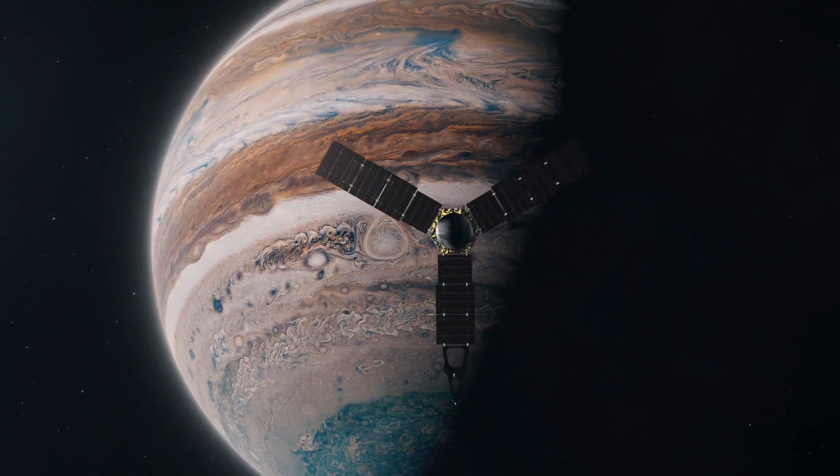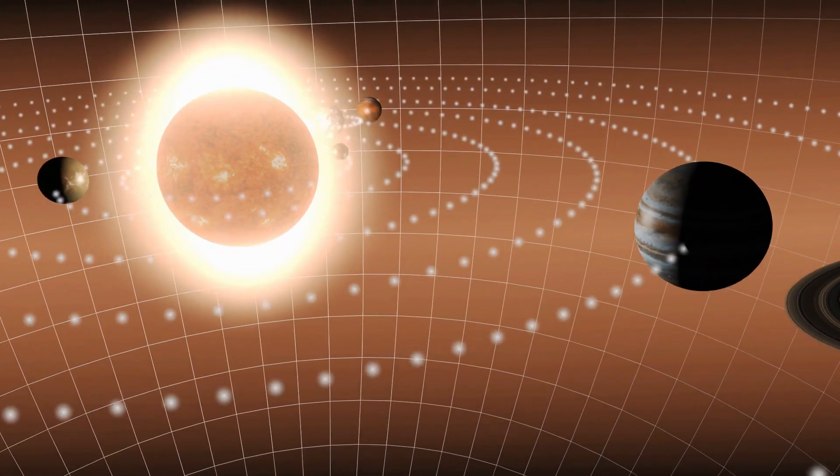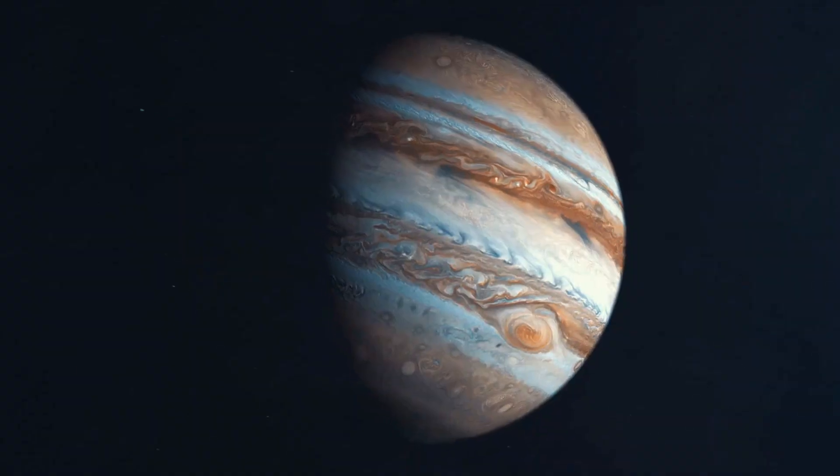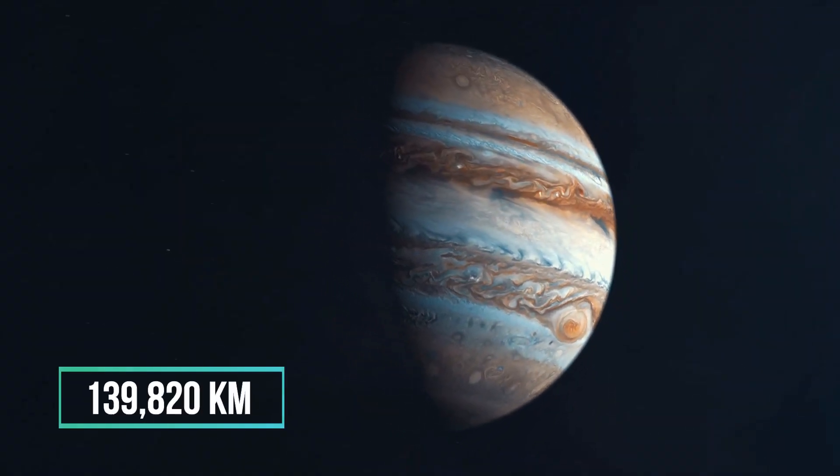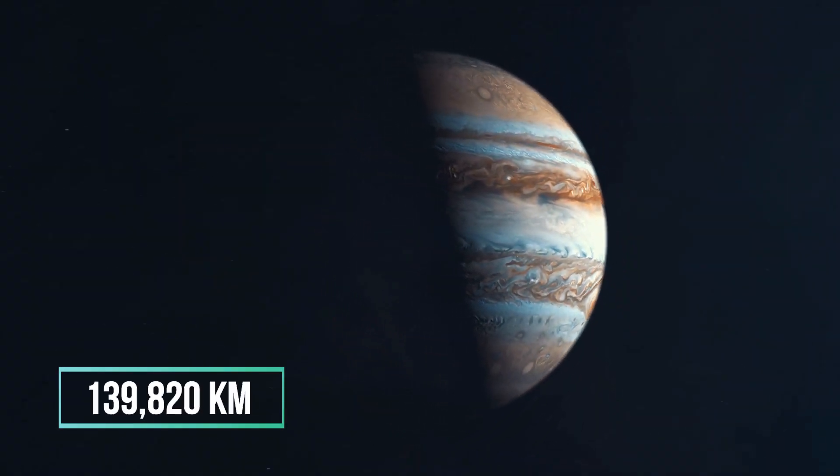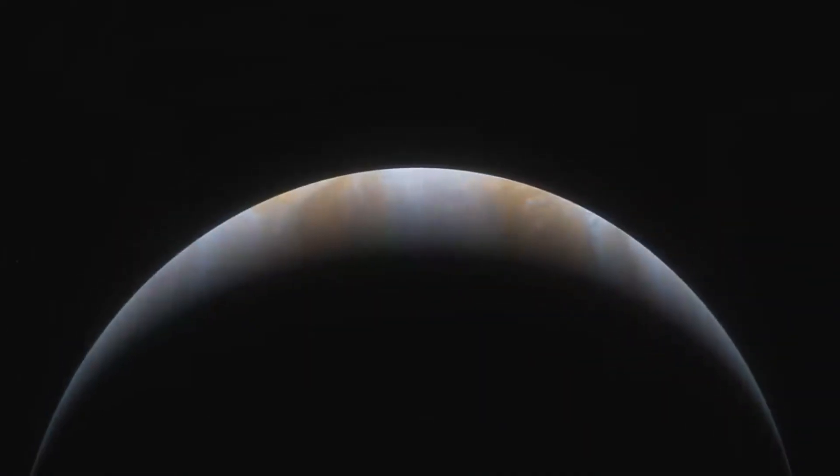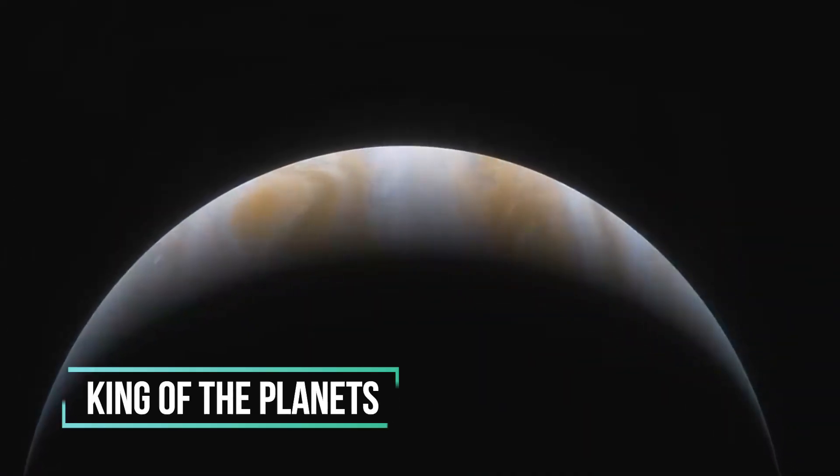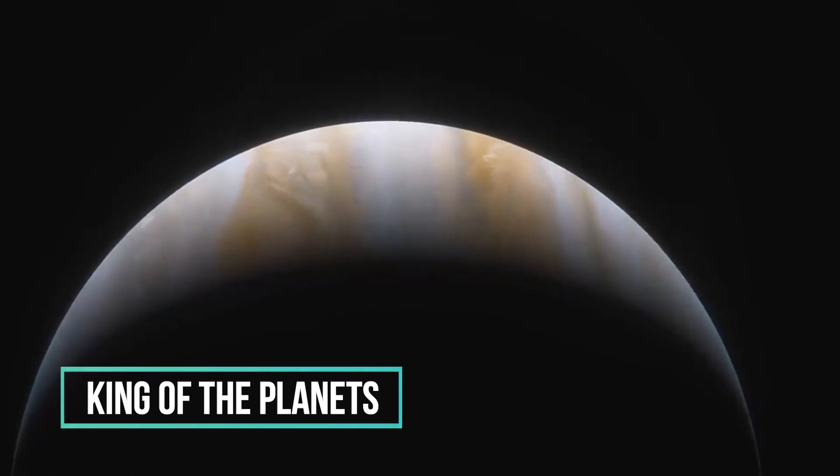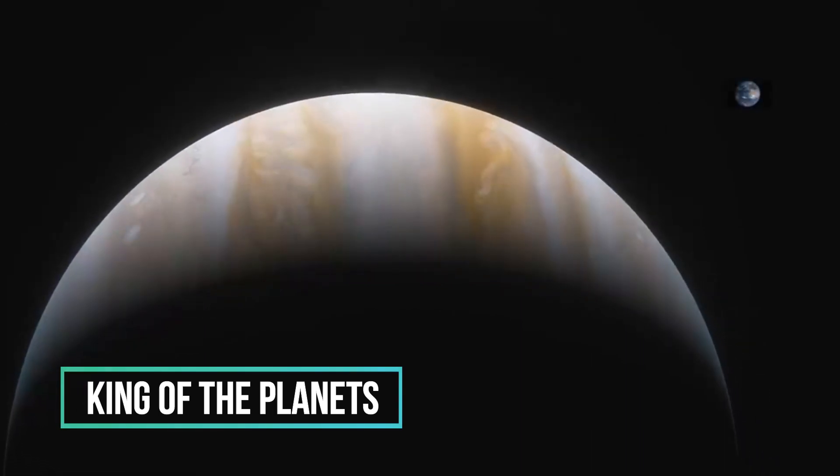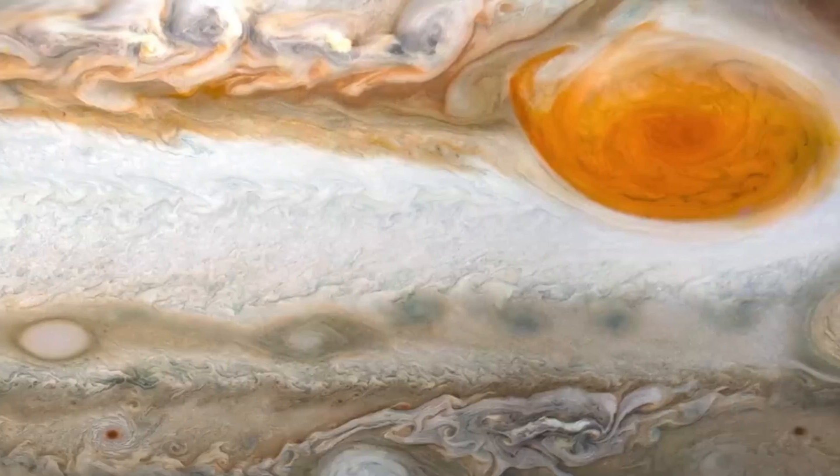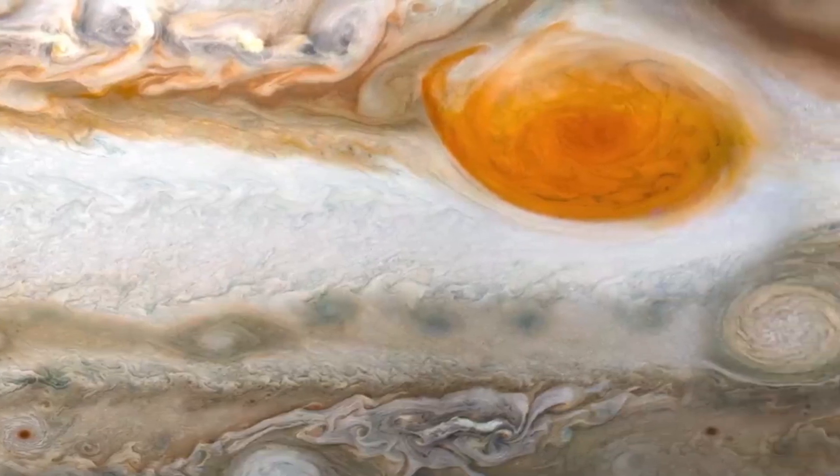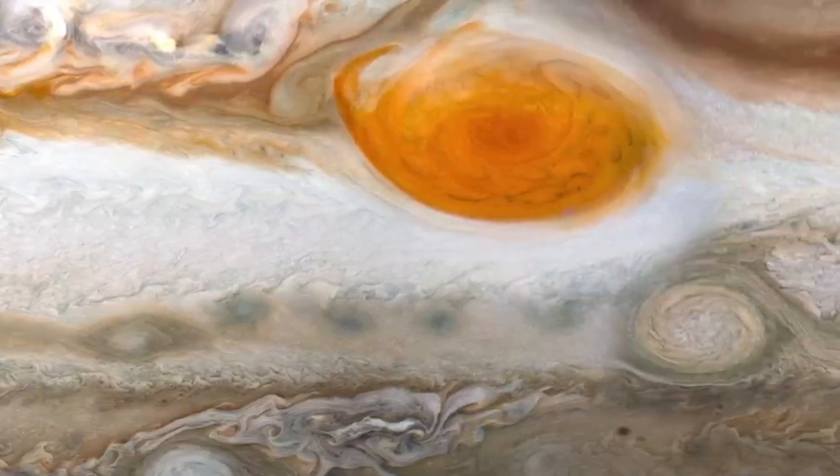Jupiter is the biggest planet in our solar system. It's about 139,820 kilometers across. People also call Jupiter the king of the planets. Jupiter would be about the size of a basketball if the Earth were the size of a grape. Most of it is made up of hydrogen and helium, which makes it more like a star than a planet.